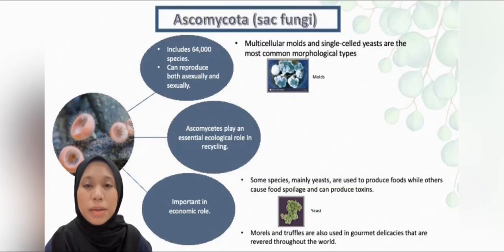Next fungi phylum is Ascomycota, also known as sac fungi. This phylum includes 64,000 species and can reproduce both asexually and sexually, but multicellular molds and single-celled yeasts are the most common morphological types. Ascomycetes play an essential ecological role in recycling by digesting materials that do not easily decompose, such as cellulose, lignin, and collagen.